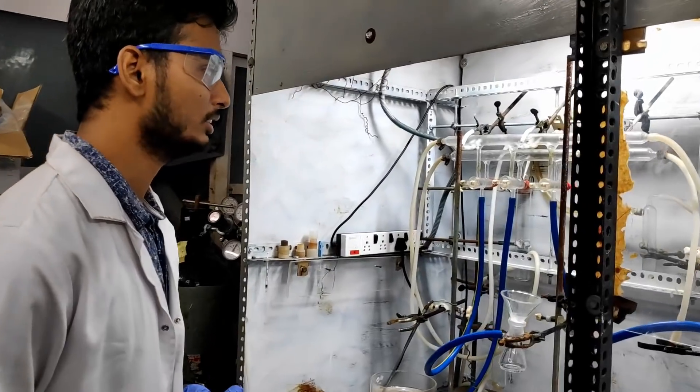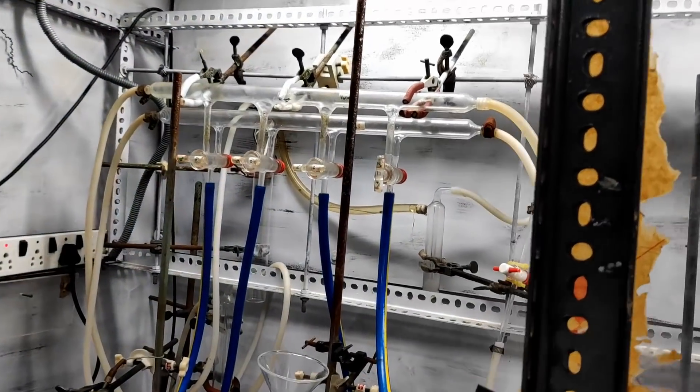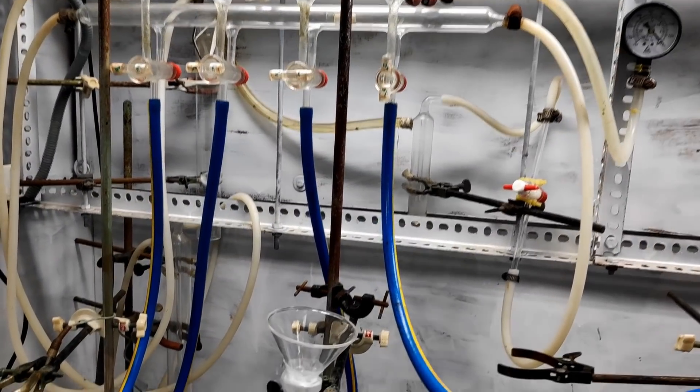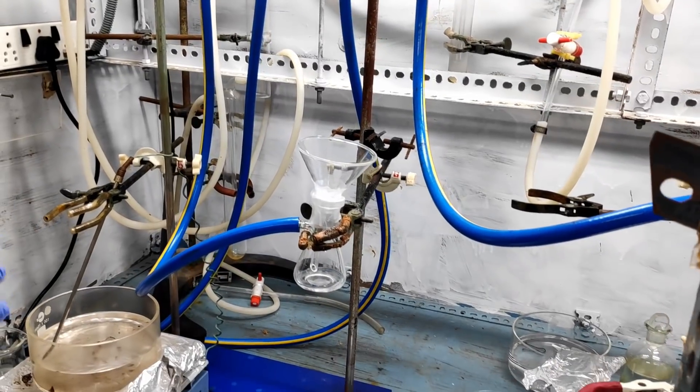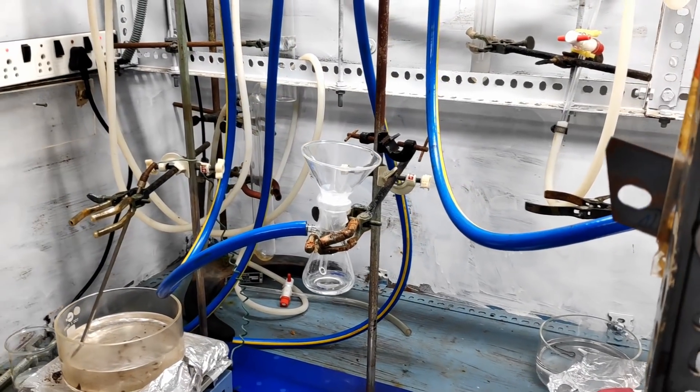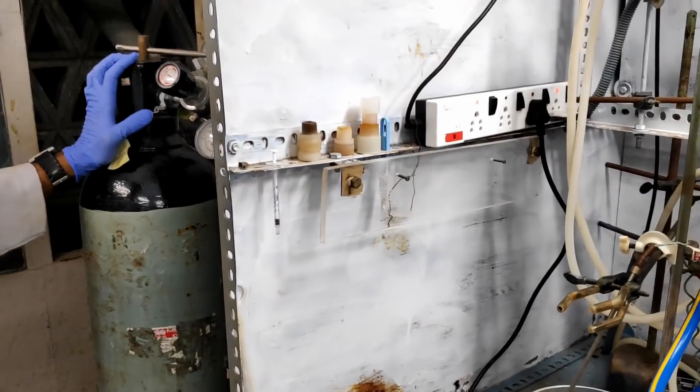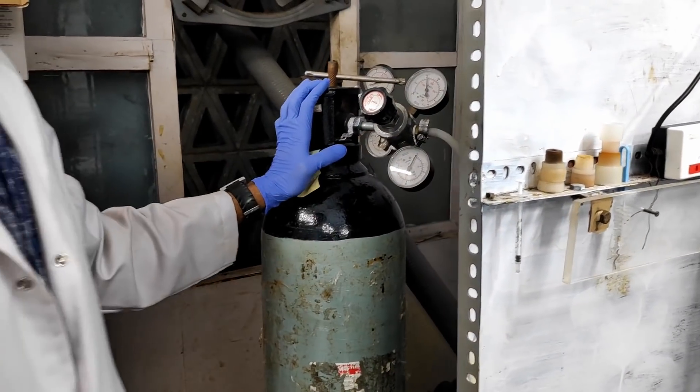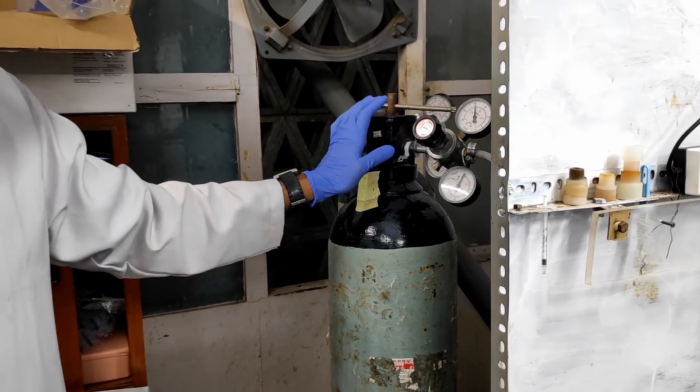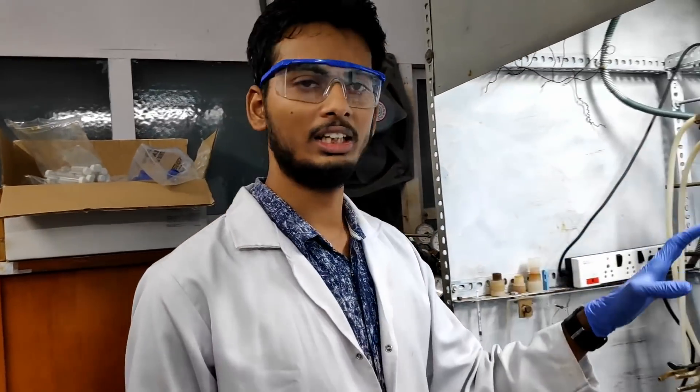Hello. So this experimental setup is a Schlenk line. We use this for air-free synthesis. Air-free synthesis is in order to prevent the compound from getting terminated from reacting components of air that is oxygen or water generally. And the gases we use for air-free synthesis are usually argon or nitrogen. And this setup can also be used for creating vacuum.